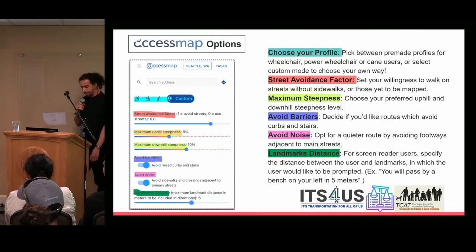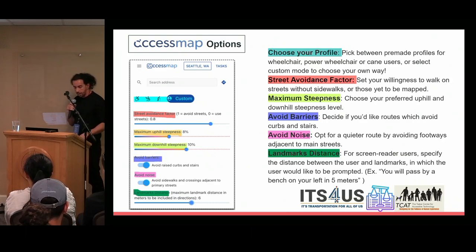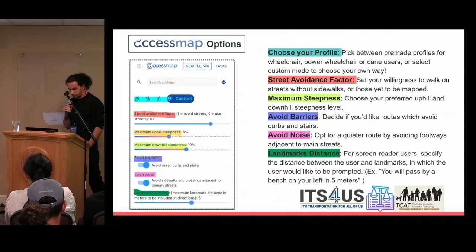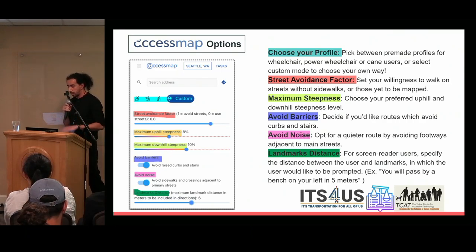Here's a look at the interface and options when you load it. You can check it out at accessmap.app. At the top you can choose your profile based on your mobility limitations — wheelchair, power wheelchair, or cane — or you can customize it completely. There's a street avoidance factor and maximum steepness, which is really important for wheelchair users regarding how steep a sidewalk they can use.